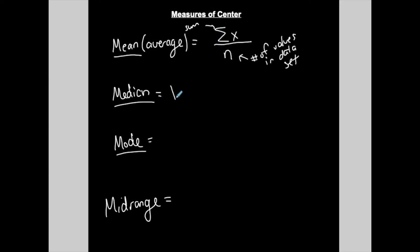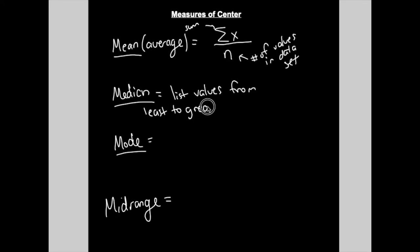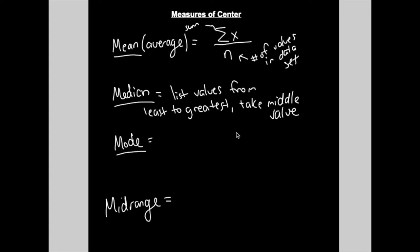For the median, first you need to list the values from least to greatest, and then take the very middle value. The middle value depends on whether you have an odd or even number of total values in your data set — I'll show you both cases.